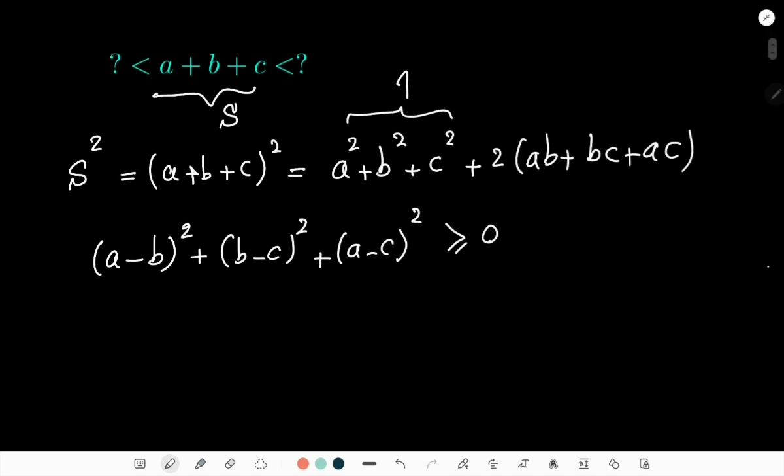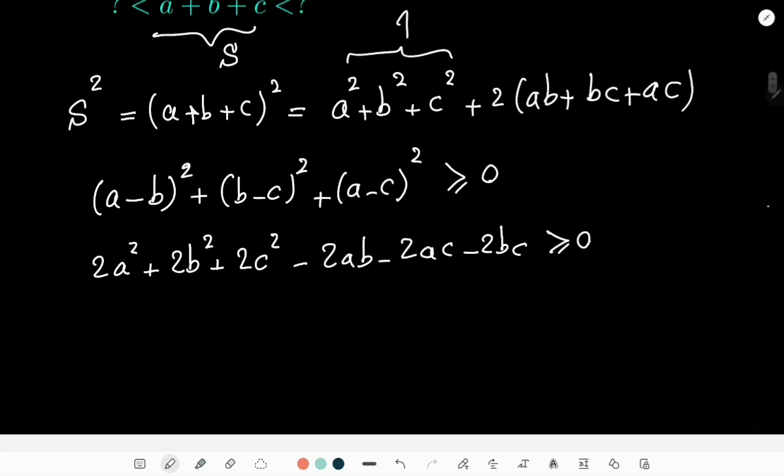So we can say if you expand this expression, then you have 2a squared plus 2b squared plus 2c squared minus 2ab minus 2ac minus 2bc greater than or equal to zero. And if you divide both sides by two, then you get a squared plus b squared plus c squared greater than ab plus bc plus ac.